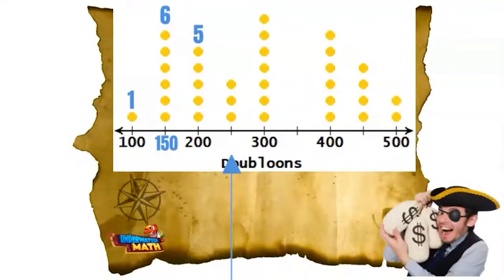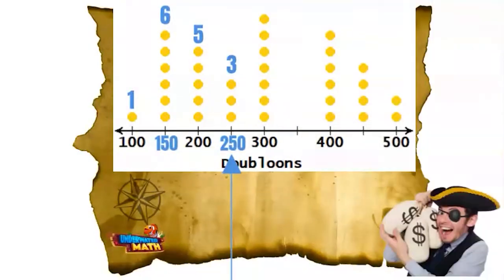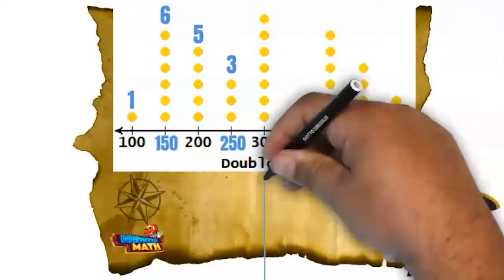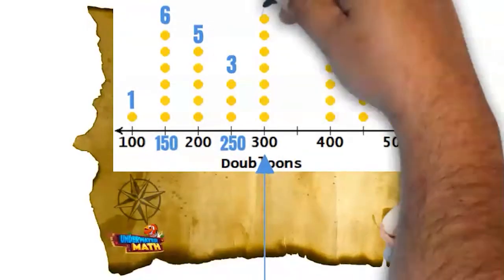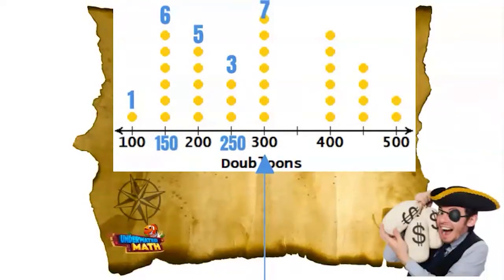The next tick mark is halfway between the 200 and 300 tick marks, which means it must be 250. There are three dots above it, which means three of my buried treasures had 250 doubloons. There are seven dots above 300 doubloons, so seven of my buried treasures had 300 doubloons.